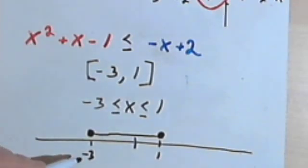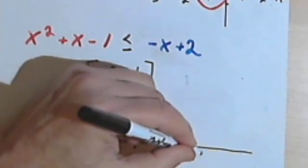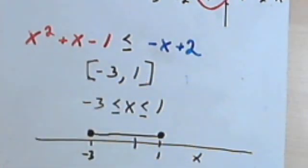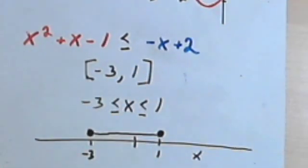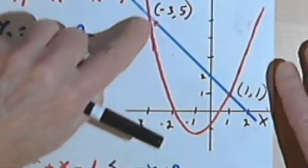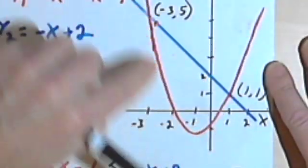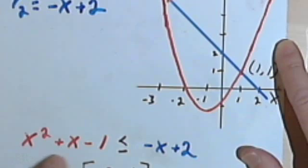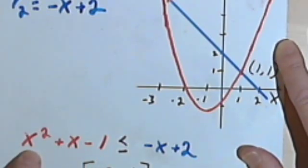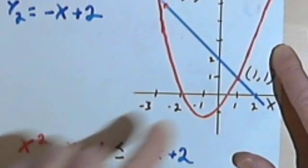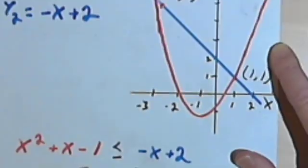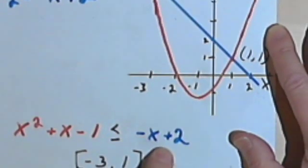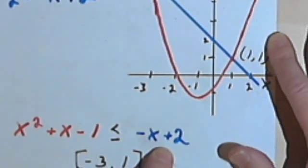Those are the x values — the number line is an x-axis — those are the x values that will make this red parabola, this quadratic expression, less than this blue line, this linear expression.